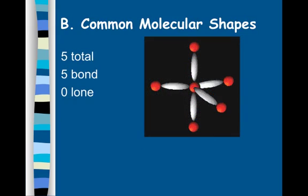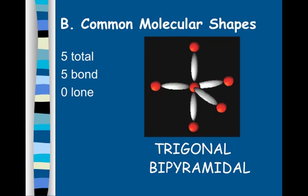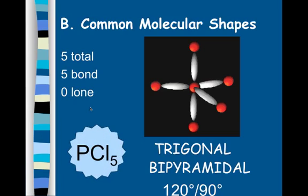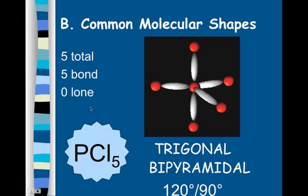Trigonal bipyramidal is our next shape. We have five pairs of electrons, all five of which are bonding and zero lone pairs. We have two bond angles: 90 degrees on some and 120 degrees on others. If you were to flip this sideways, it would look like a seesaw — I'll show you this with our modeling kit. An example is phosphorus pentachloride, PCl₅.